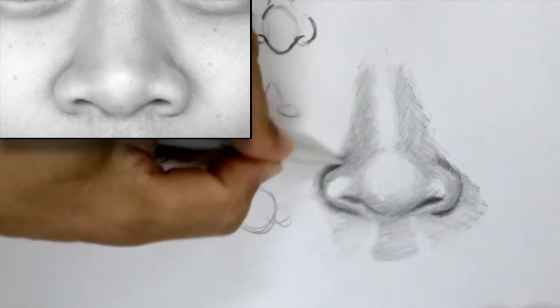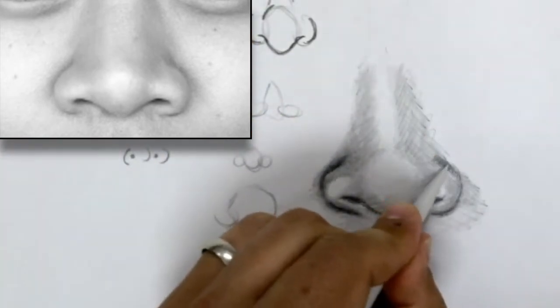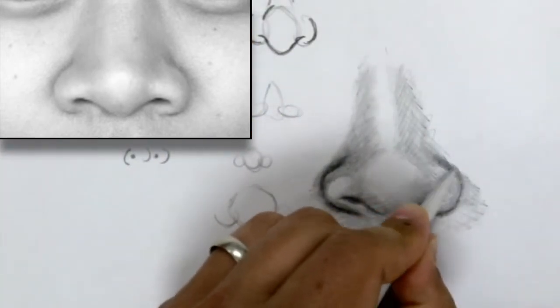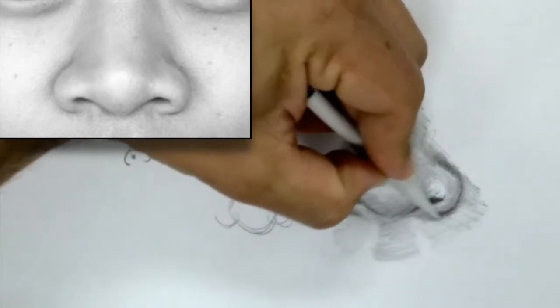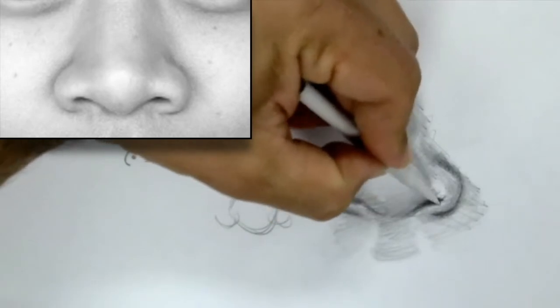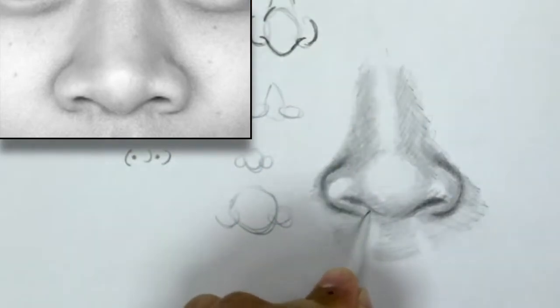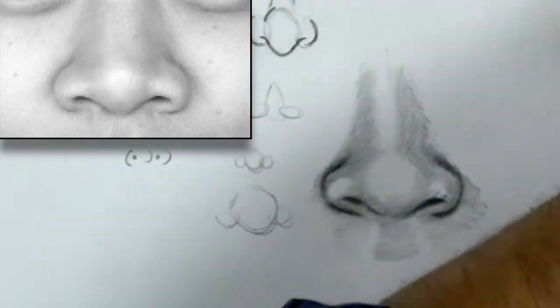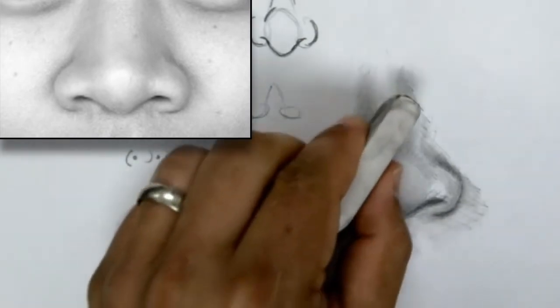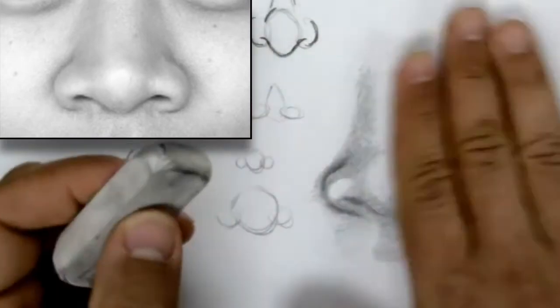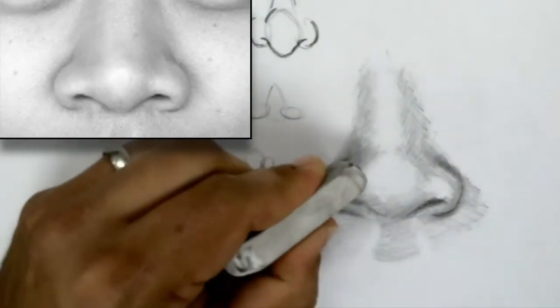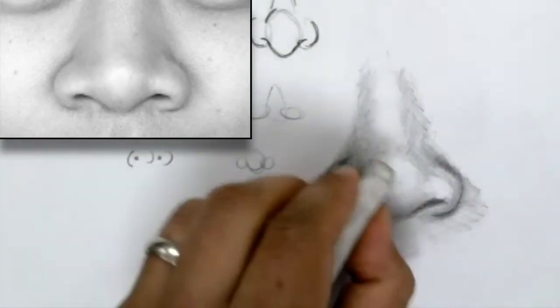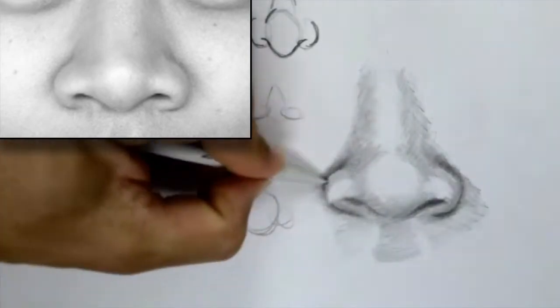At this point, I'll use my eraser if I have to pull out some brighter areas or if I felt like my highlight wasn't exactly where it needed to be. I'm just dabbing and lifting out with the eraser, not pushing hard.